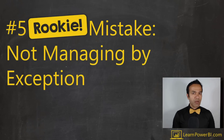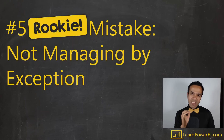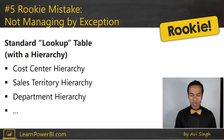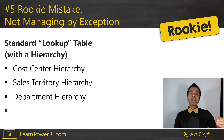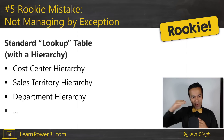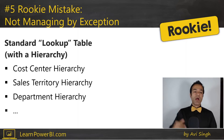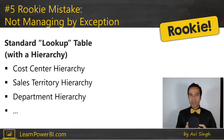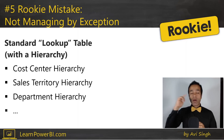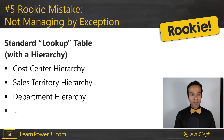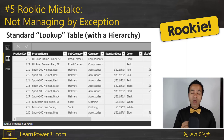Number five rookie mistake: not managing by exception. This one is slightly subtle, but stay with me. A common scenario is having a standard lookup table with a hierarchy — like a cost center hierarchy, a sales territory hierarchy, or a product hierarchy. In this example, I'll use the product hierarchy: product name, subcategory, and category. Business moves fast, and sometimes you have exceptions — a reorg or a change not yet reflected in the system — so a few rows need to be different from what's stored.